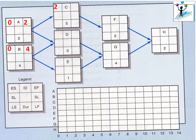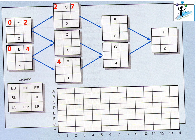Activity C can begin once Activity A has finished, so it could begin after week two — that's why we put two as the early start time for Activity C. It has a duration of five weeks, so the early finish time for Activity C is week seven. Activity E begins after week four once Activity B has finished, so the early start time is four, and with a duration of one week, the early finish time is five.